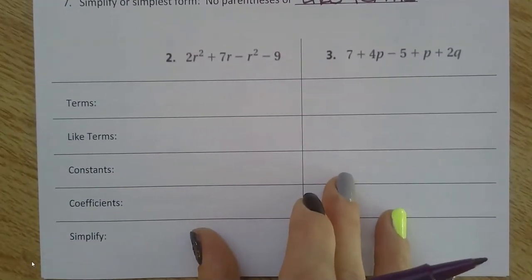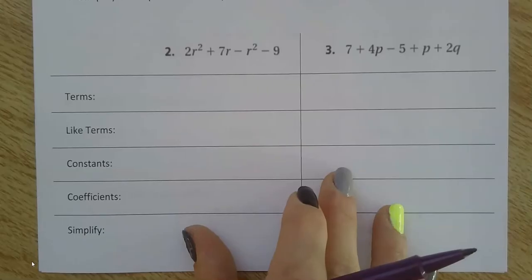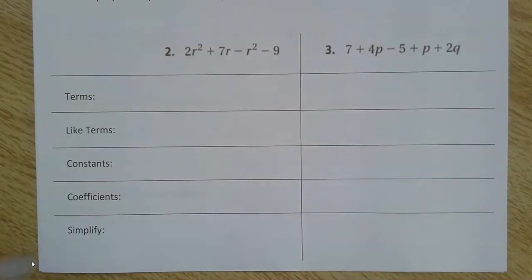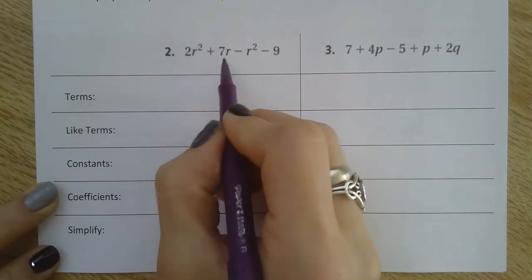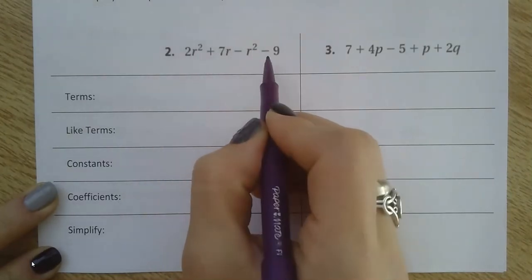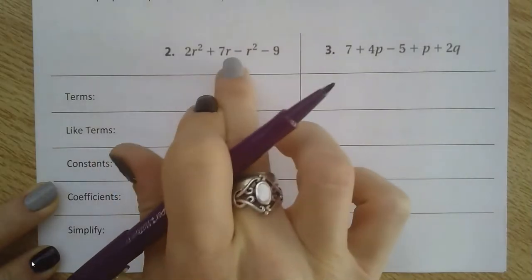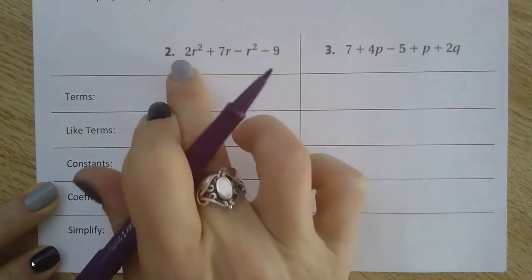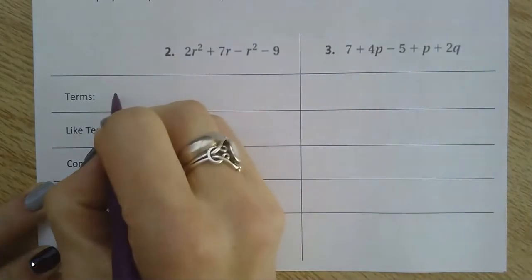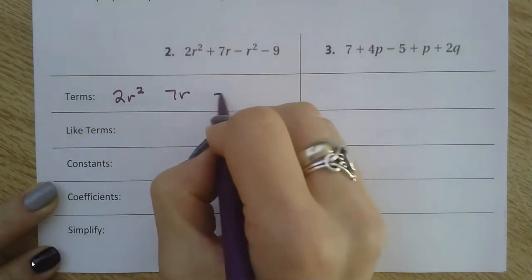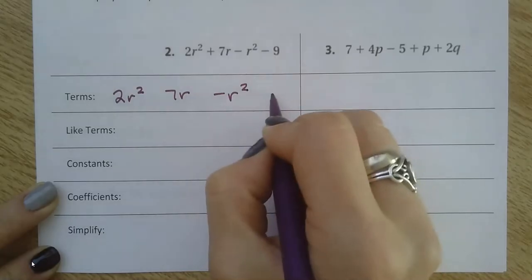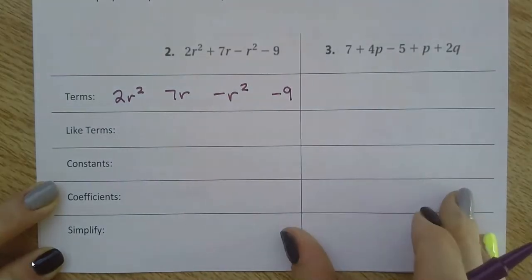Let's look at some examples of terms, like terms, constants, and coefficients. I have an expression here: 2r squared plus 7r minus r squared minus 9. If I look to separate it where the plus and minus signs are, I can see I have four terms: 2r squared, 7r, negative r squared, and negative 9.